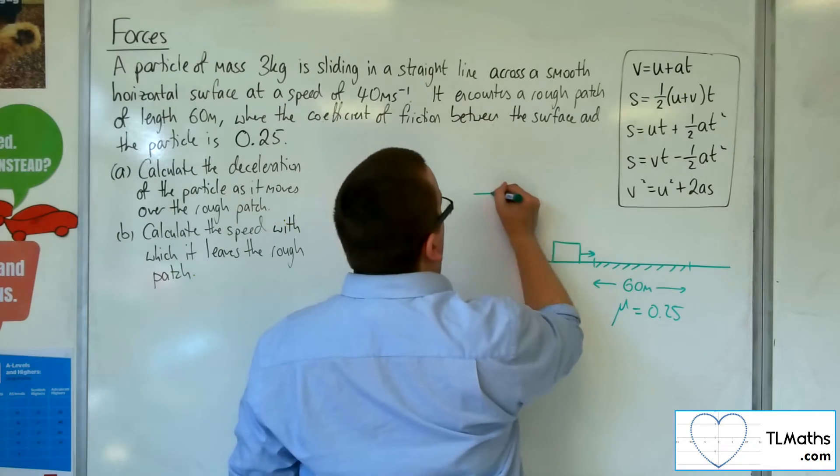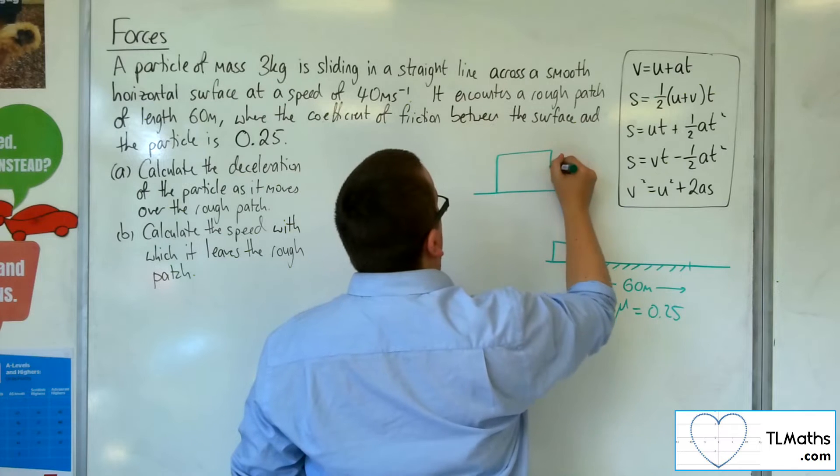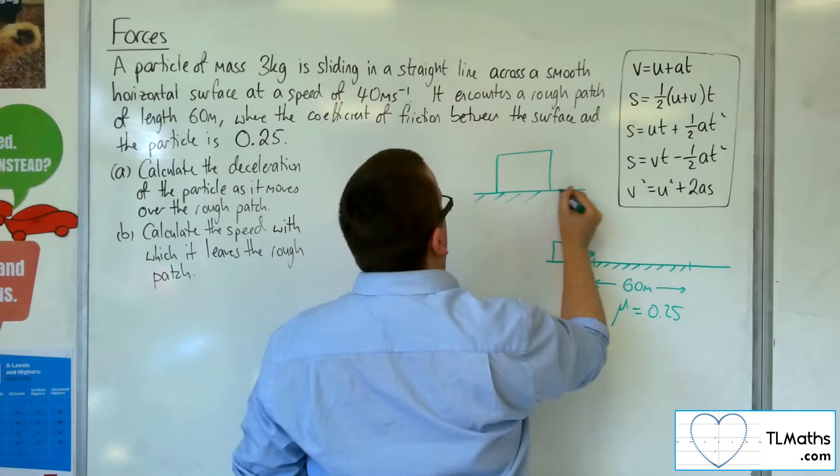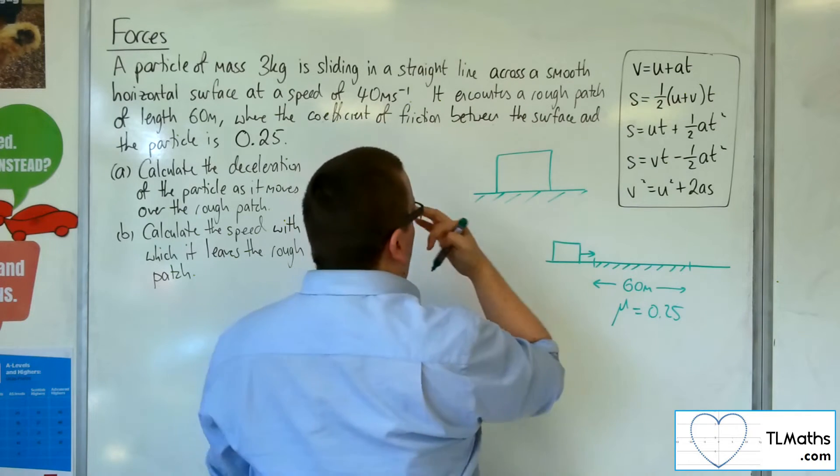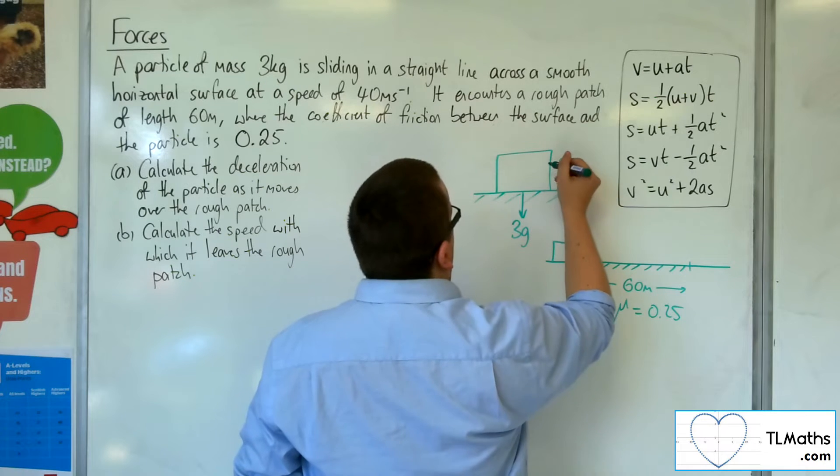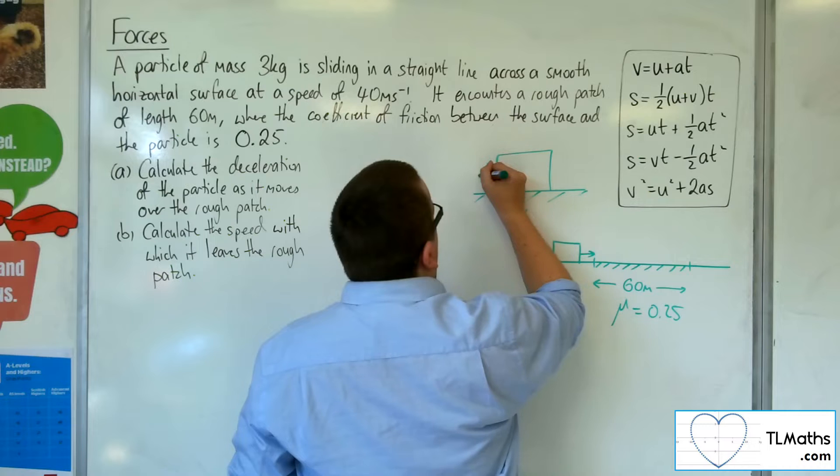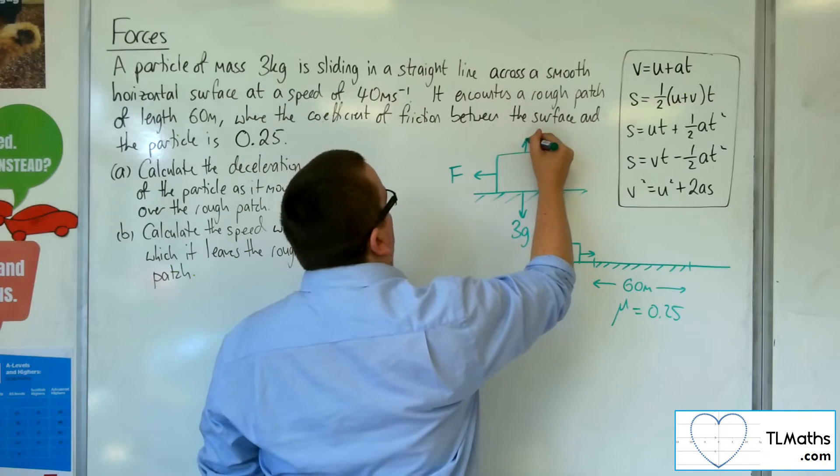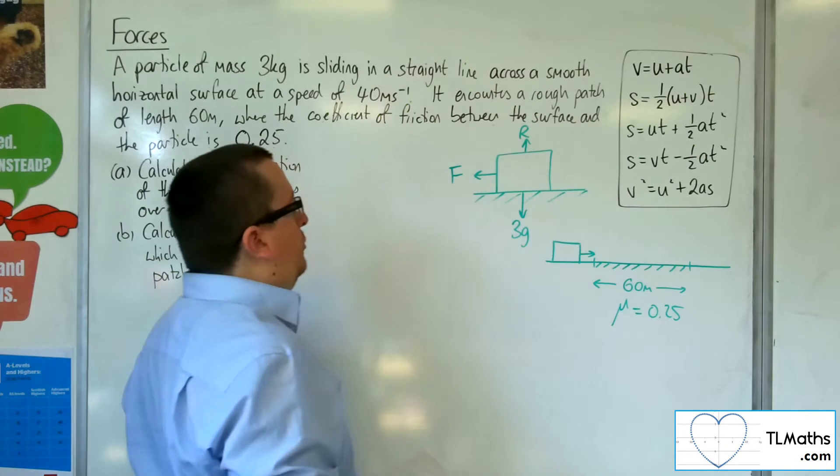So if we just look at the particle on the rough patch, it's got a mass of 3 kilos, so it's got a weight of 3g. It's going to have this frictional force working against it, and there's the normal reaction force.